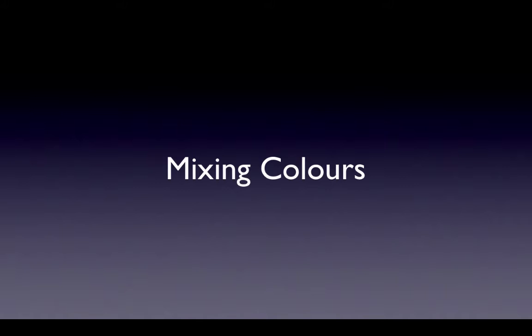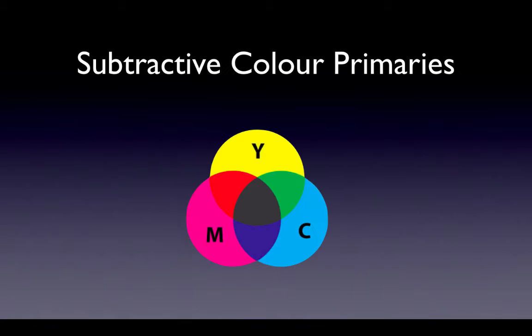There are two different systems called color primary systems. The first system is called the subtractive system. You might be familiar with this from art classes, because this system is used with ink and paint, all kinds of pigments that go on surfaces.